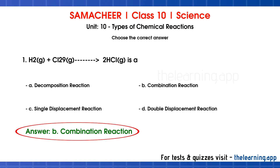In a combination reaction, 2 or more reactants combine together. The reactants can be 2 elements, or 1 element and 1 compound combining to form 1 new compound, or 2 compounds combining to form a product. In this question, H2 and Cl2 are both single elements combining. The general formula for combination reaction is: A plus B gives AB.